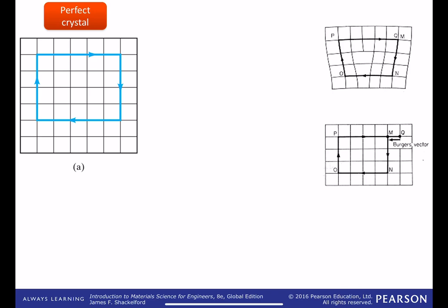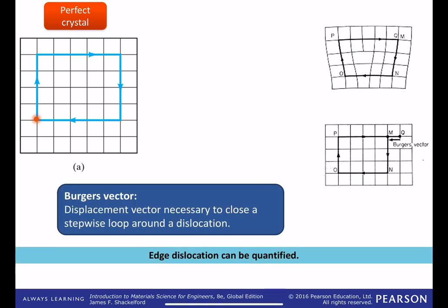So there's something called a Burger's vector that helps us quantify this. The exercise is to walk around a defect and add back a Burger's vector to get back to where you started. So we'll make use of the image in A in a moment, as we consider walking around a defective present.